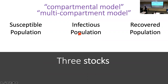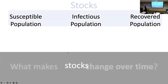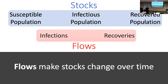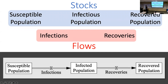We have three stocks representing the three portions of the population. Stocks don't change on their own — they need flows. So not only do we define the stocks, we have to think about how to make them change. We need to track the rate of change from susceptible to infectious, and from infectious to recovered. Those rates are covered by the infections flow and the recoveries flow.